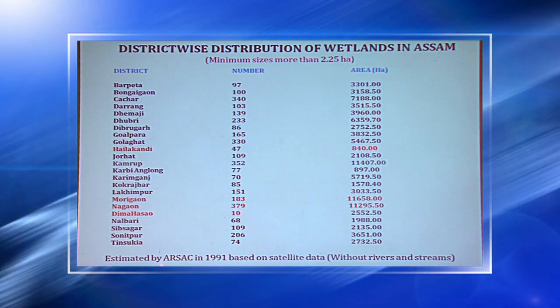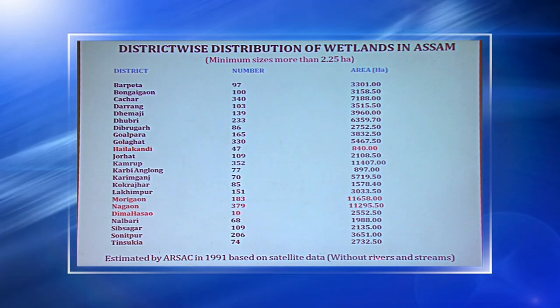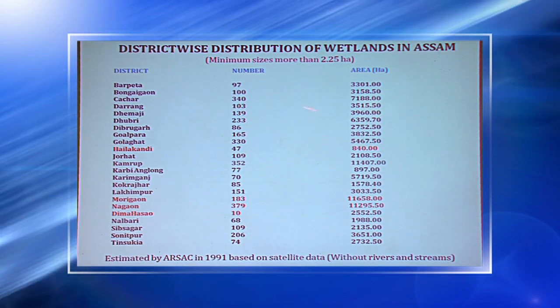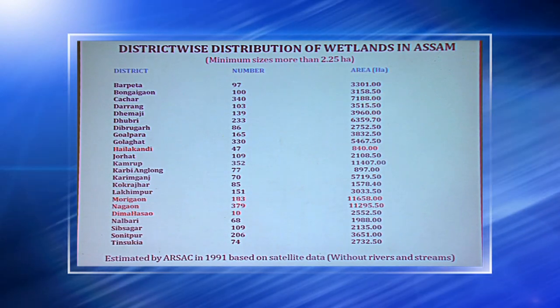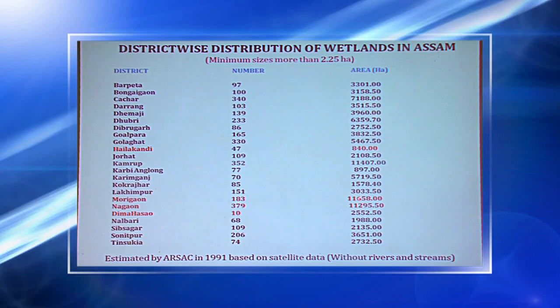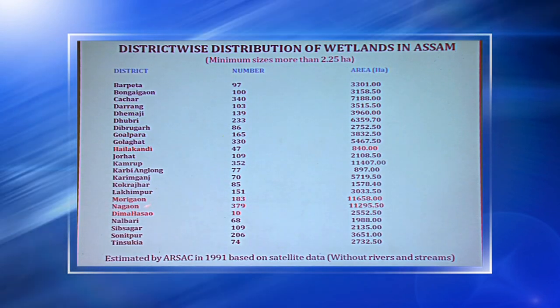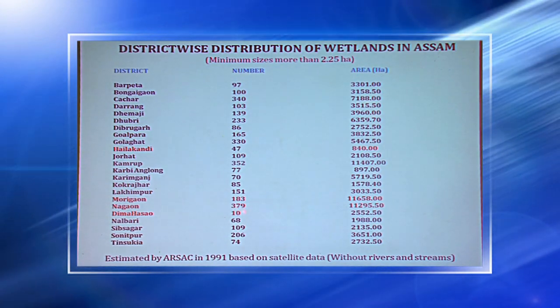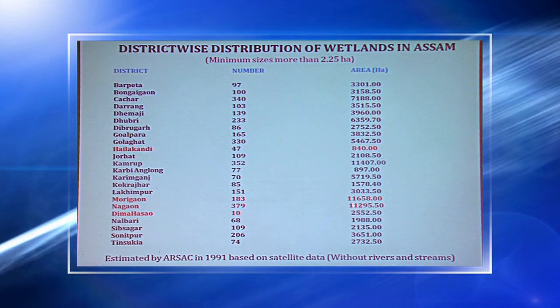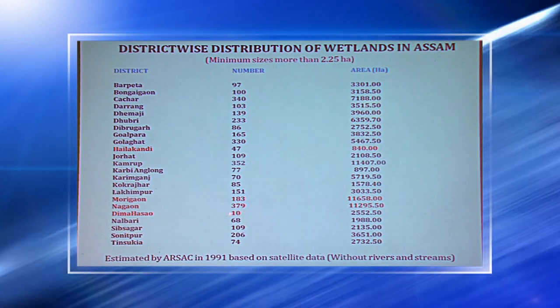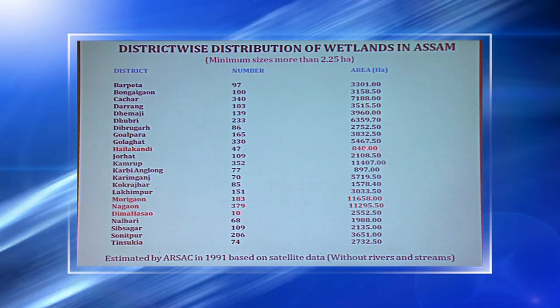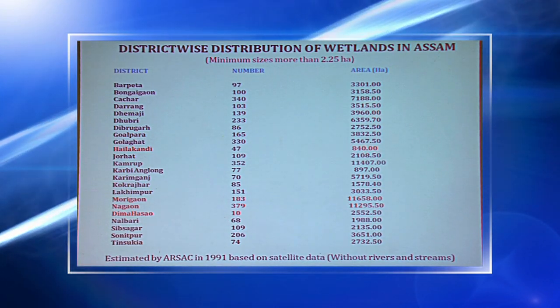In 1991, the Assam Remote Sensing Application Centre, without considering rivers and streams, identified wetlands and found that Mohegaon district has only 183 wetlands but covers the highest total area at 11,658 hectares. On the other hand, Naugaon district has the highest number of wetlands — 379 — with a total area of 11,295.5 hectares. Dimahasa has the lowest number of wetlands, and Hailakandi has the lowest area under wetland category. Every district does have some wetlands.